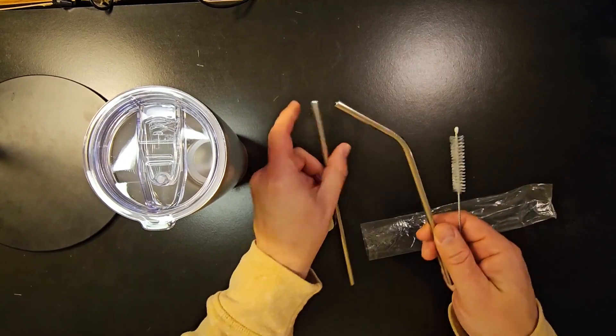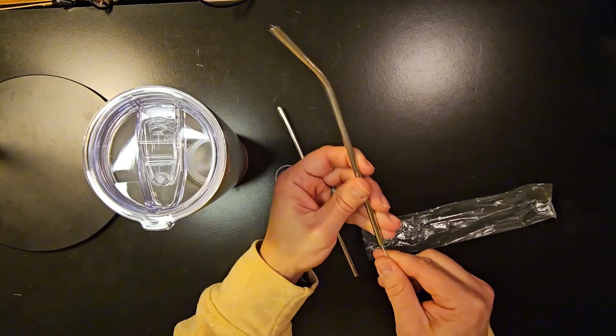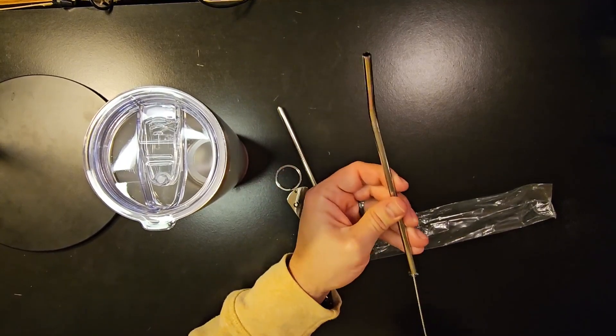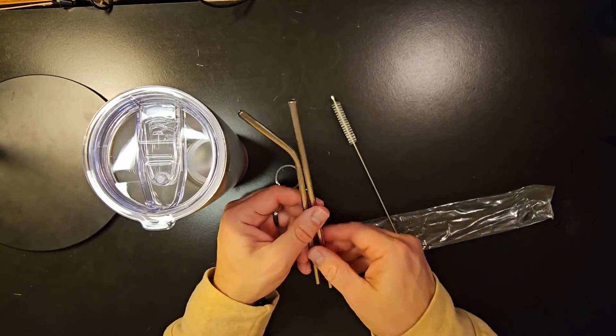And then right here there's your two straws with what looks like a pipe cleaner to be able to clean the straws. Obviously you just stick it in the straws like that, so that's pretty cool. It comes with that.